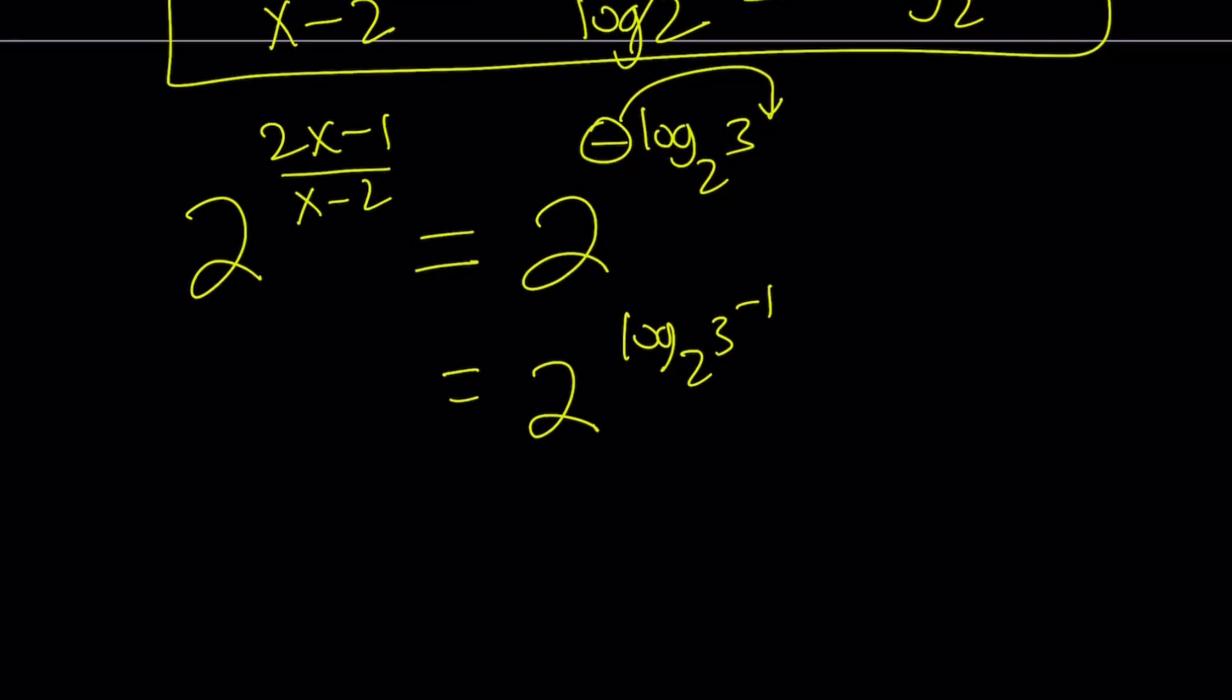from the properties of logs again, this just becomes, because these bases are the same, this just becomes 3 to the power negative 1, which is the same thing as 1 third. Awesome.